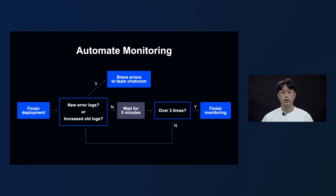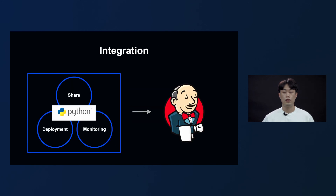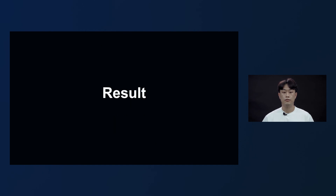This is the entire flow of automated monitoring. After deployment, we check to see whether there are any new error logs or an increase in old error logs. If there is any problem, we share the error log to the team chat room. If not, we check once again after 5 minutes, and we do this 3 times. After repeating for 3 times with no problem, we finish monitoring. We wrote the script for sharing, deployment, and automating monitoring in Python and integrated it into a Jenkins job. If you build the Jenkins job, the 4 steps I previously explained will be automatically executed.